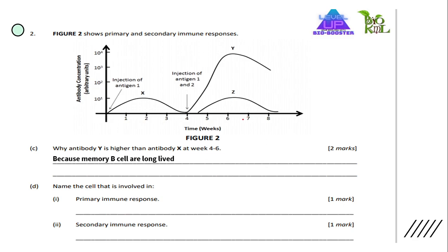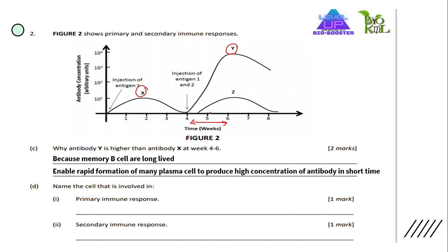Question C: Why is antibody Y higher than antibody X at week 4 to 6? Antibody Y is produced in higher amounts because memory B cells are long-lived and enable rapid formation of many plasma cells to produce a high concentration of antibody in a short time. Memory B cells produce plasma cells, and plasma cells produce the antibody.